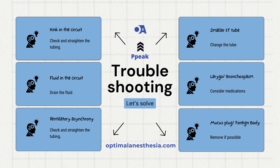What if the ETT is too small or has biofilm formation? This is like trying to breathe through a narrow, clogged straw. Solution: consider changing out the tube for a larger or cleaner one. High flow rate or tidal volume can also increase peak pressures — it's like turning your garden hose to full blast. Solution: adjust the ventilator settings to find a balance that reduces resistance. Now let's talk about ventilatory asynchrony, when the patient's breathing rhythm doesn't match the ventilator — it's like trying to dance with someone out of sync. Solution: increase sedation to better synchronize the patient's breathing with the ventilator.